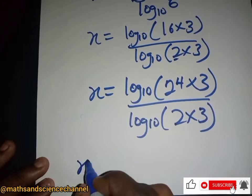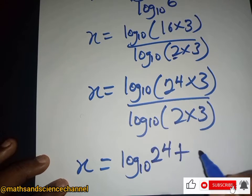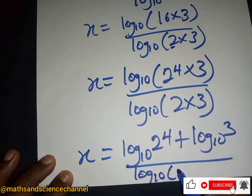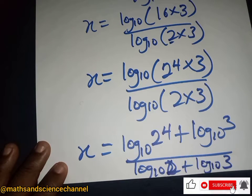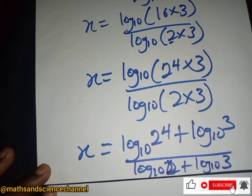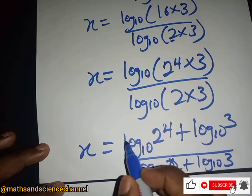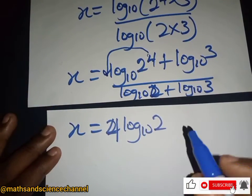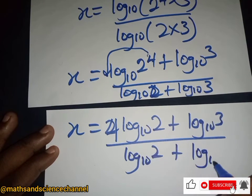Since logs are multiplying, we can add them. So the numerator becomes 4 log 2 plus log 3, and the denominator becomes log 2 plus log 3, all in base 10.